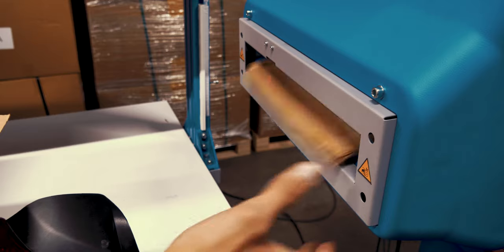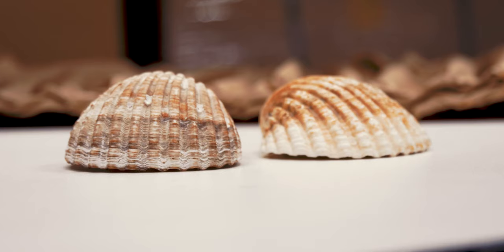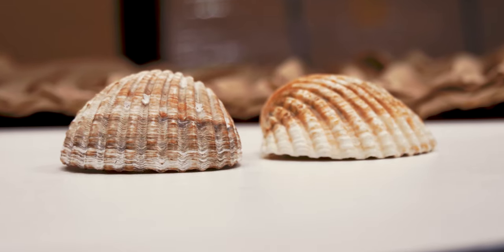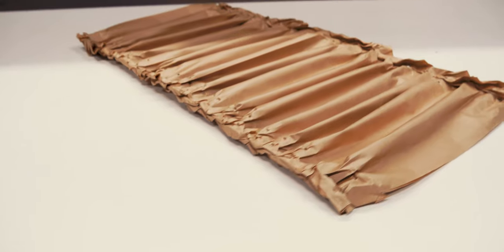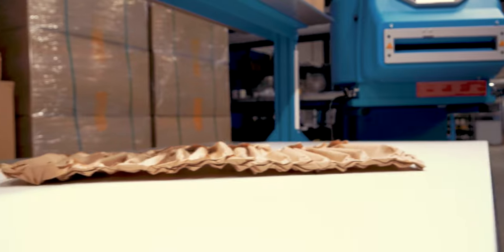For the shape of the paper, we looked at other alternatives, other shapes in nature and we saw that, for example, shells, that they all had a waved form and that would form a very stiff structure.